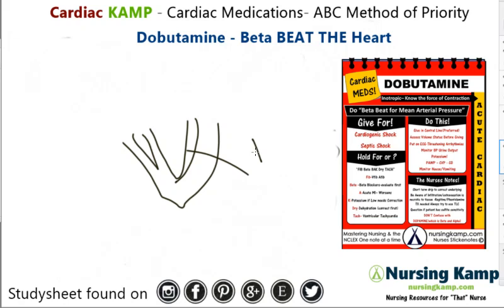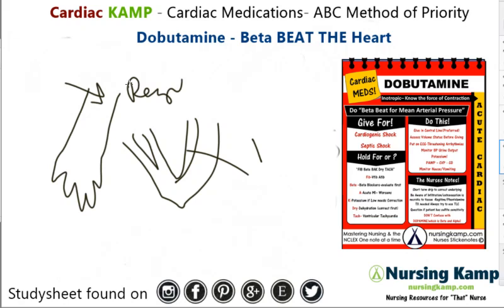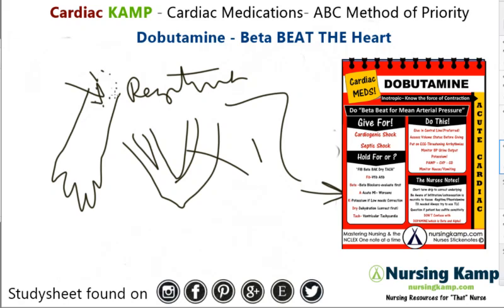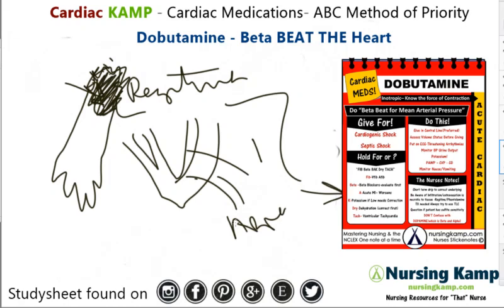What happens if the medication does get infiltrated? They need Regitine (phentolamine) — Regitine is the antidote. You basically put needles around the infiltration site to stop it from sloughing tissue and causing a problem. That's why a triple lumen is the most appropriate delivery method for this medication.